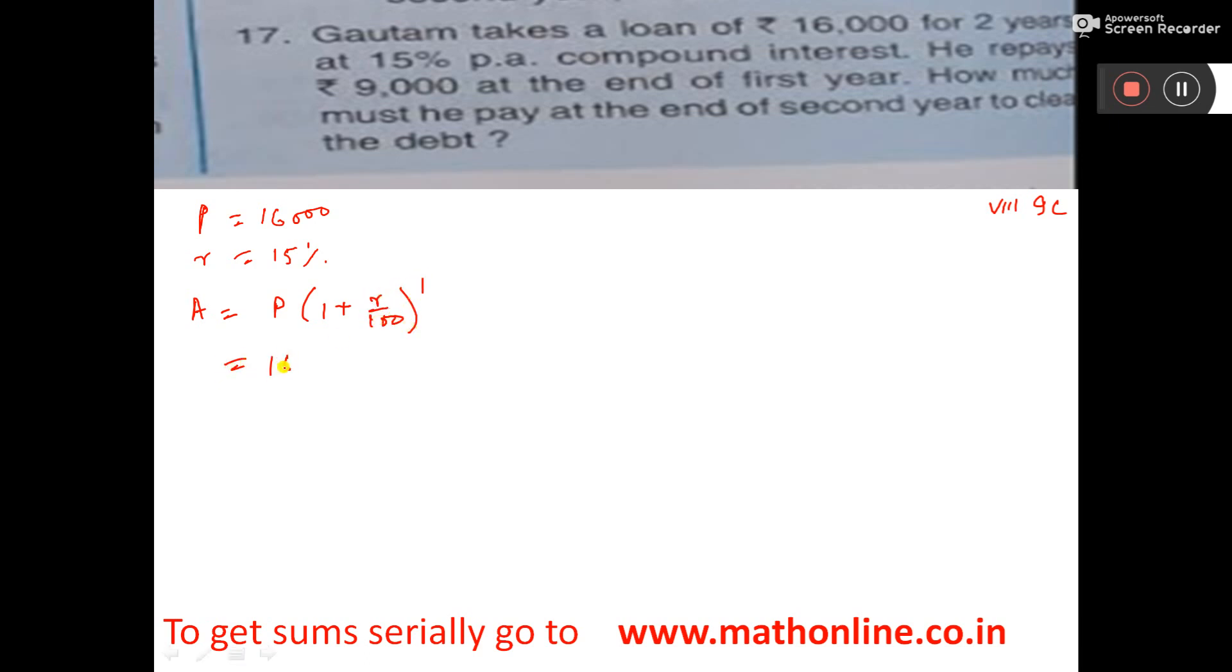P is equal to 16,000, 1 plus R means 15 by 100 whole to the power 1, that is 16,000 into 100 plus 15.